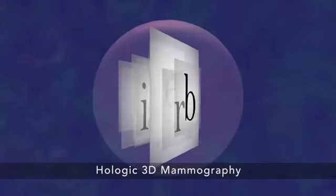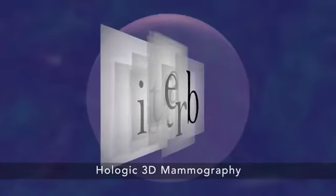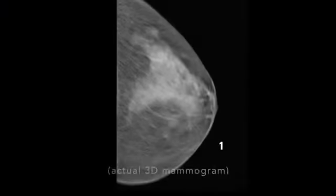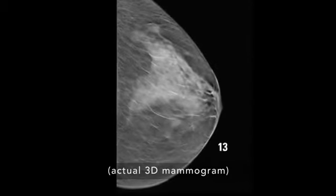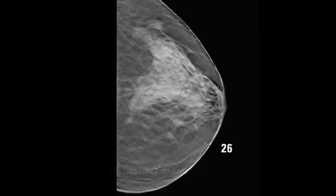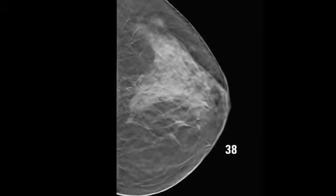3D mammography is different because it shows your tissue in very thin layers, almost like turning pages in a book. That makes it easier for doctors to see if there's anything to be concerned about. There's less chance for a cancer to hide behind overlapping tissue.